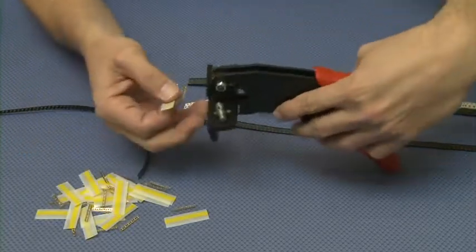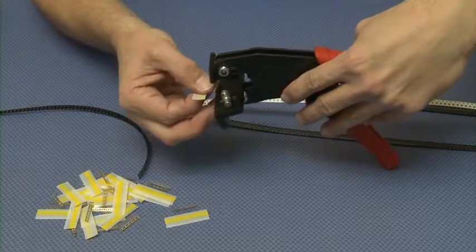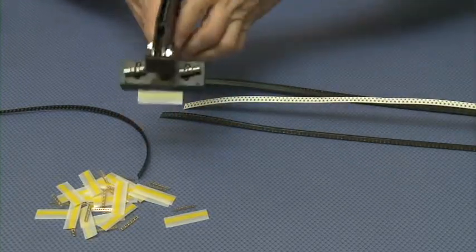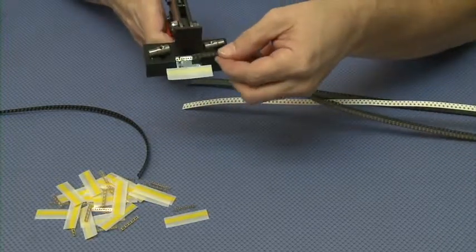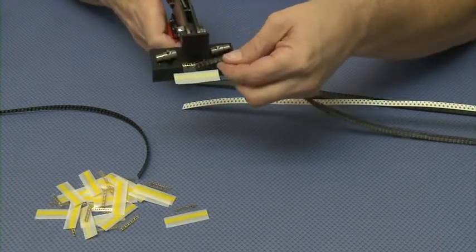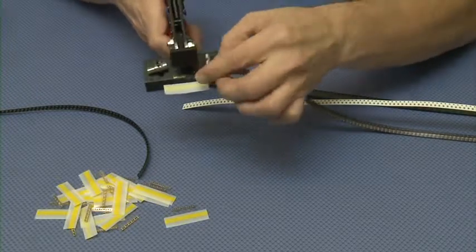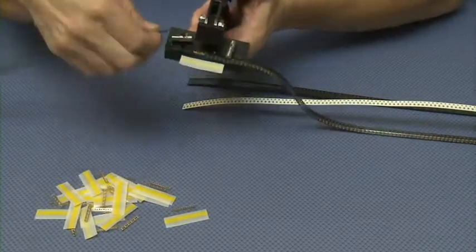You will place this in the splice tool with the teeth up, centered on the pins. You will then put the two pieces of carrier tape that are going to be spliced together, butted up against each other, not overlapping, to be able to create that seamless splice.